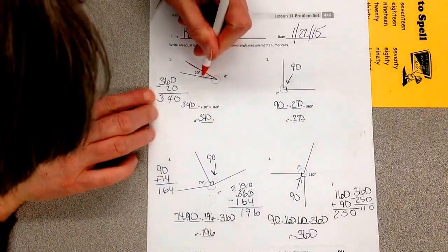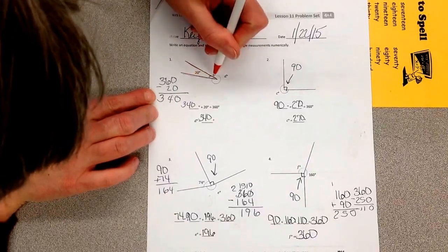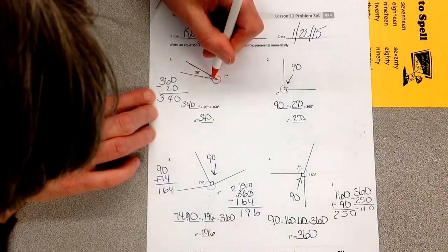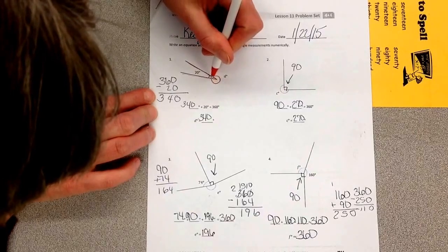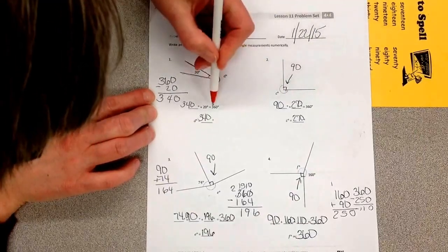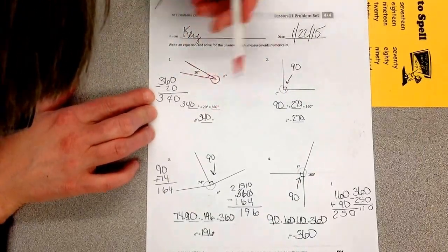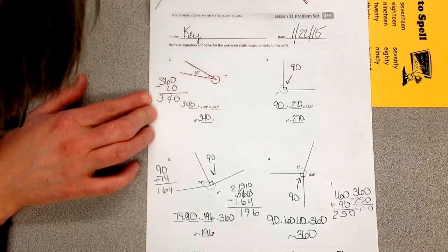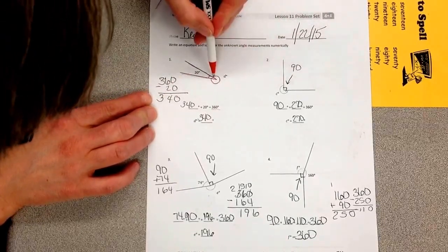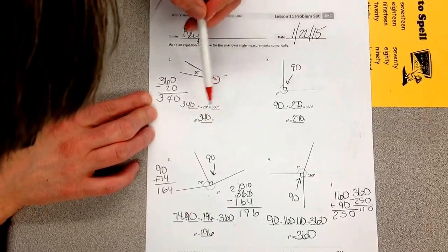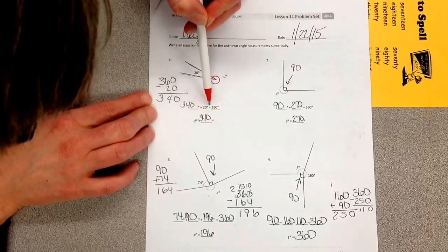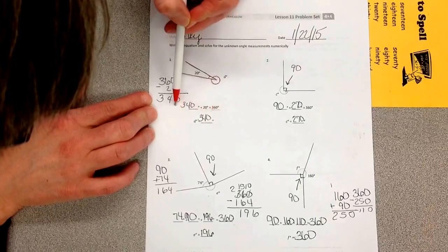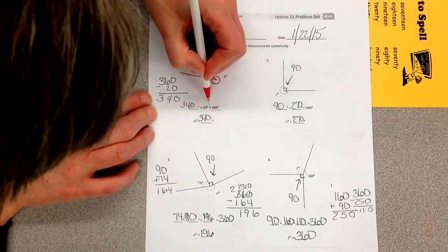Here's the angle. They tell you that this is 20. Now they want you to find the rest of this. Well, it goes around completely in a circle. They're telling you it's 360. So 360 minus 20 gives you 340. So the measure of this angle is 340. 340 plus 20 is 360. This is your equation. Equations have equal signs.